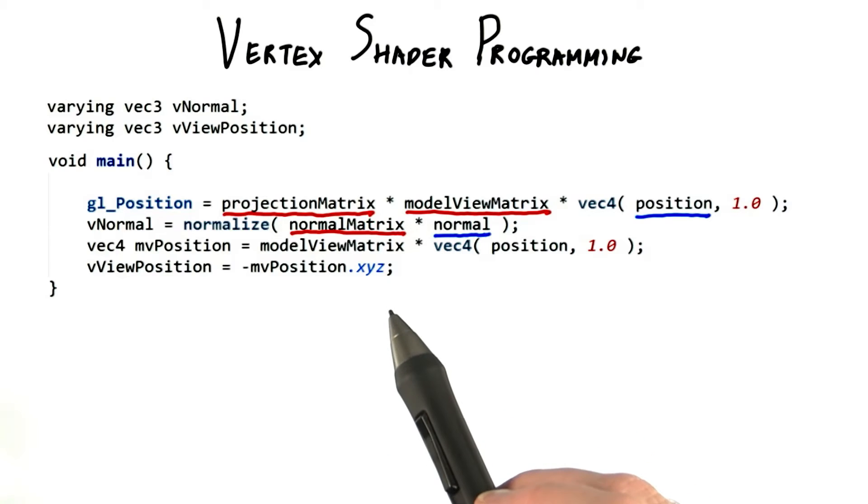In 3JS, these are always available to the shader if desired. In WebGL itself, you need to do a little more work.